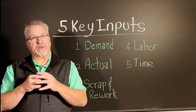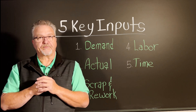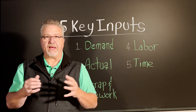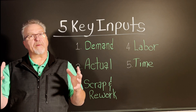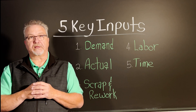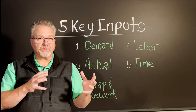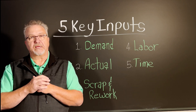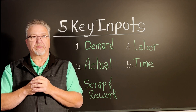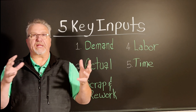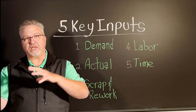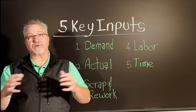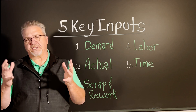So what are these five inputs? The first key input is production demand. Knowing how many of a particular product, production run, or product order your customer requires is this basic metric. This is simple knowledge of how many pieces, units, or pounds are scheduled to be produced during a given duration of time. Pretty simple.